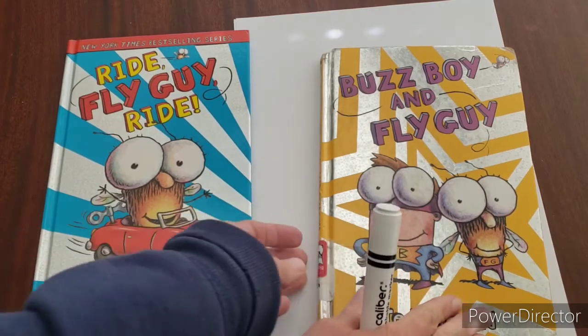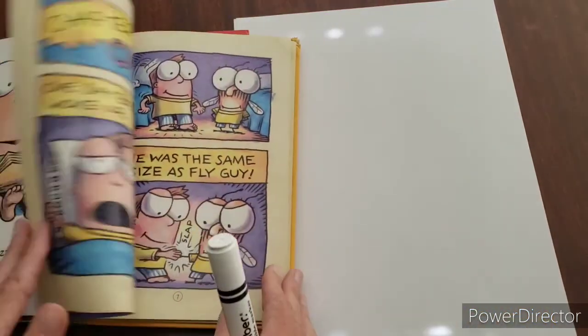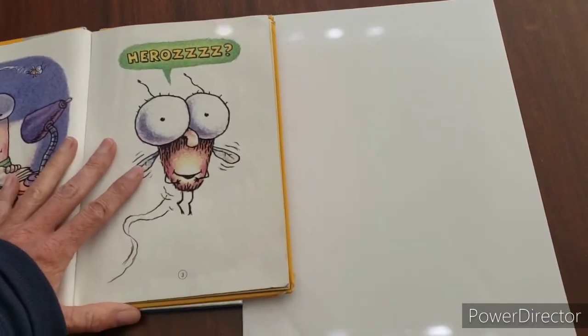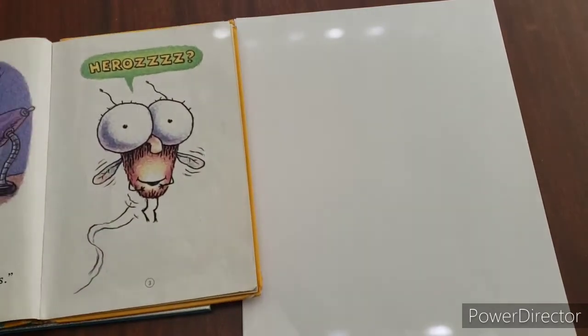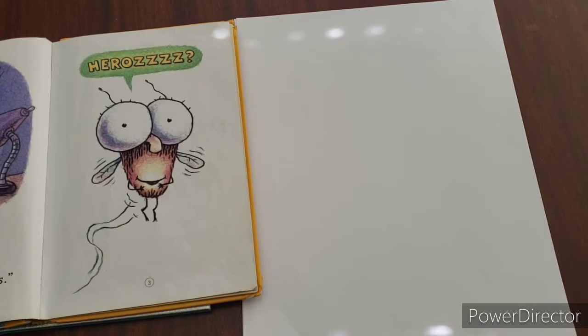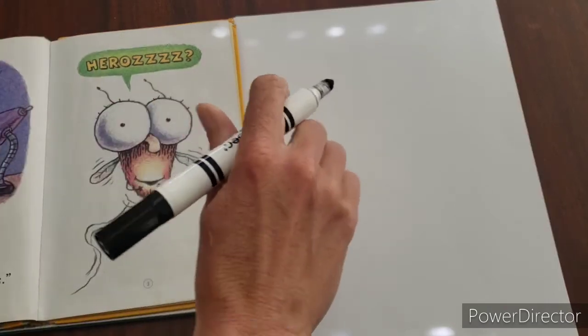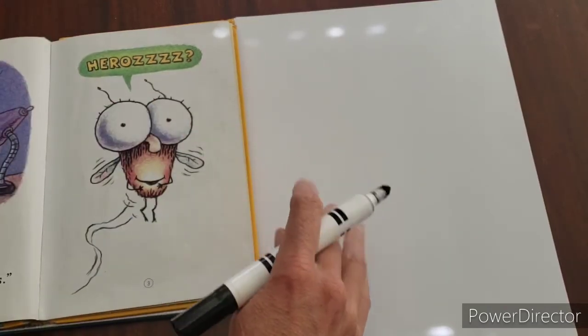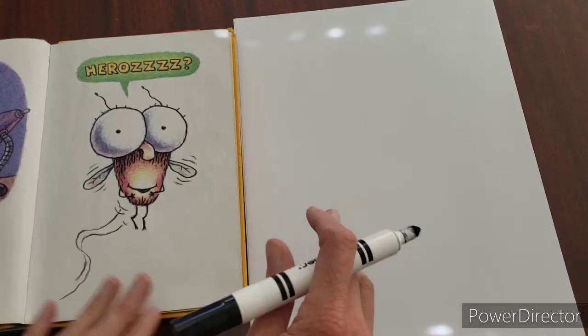Okay, are you ready? So I'm going to copy this picture. I think that's a really good picture of Fly Guy. We're going to copy it together. You just need a marker or a pencil and some blank paper.